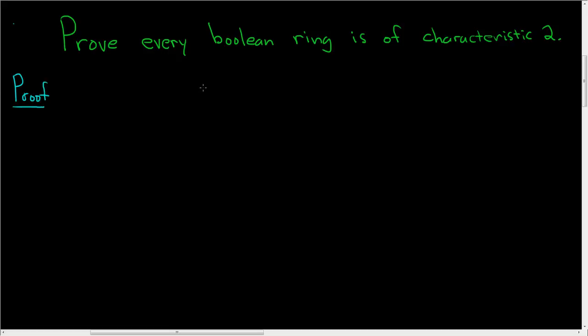So before we start the proof, let me remind you what a Boolean ring means. R is a Boolean ring if it contains 1, and every single element, so for all x in our ring R, every single element is idempotent, so x squared is equal to x for all x in R. And a ring is of characteristic 2 if x plus x is equal to 0 for all x in R.